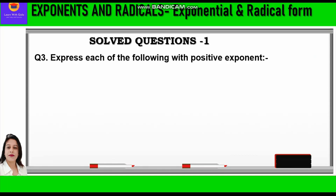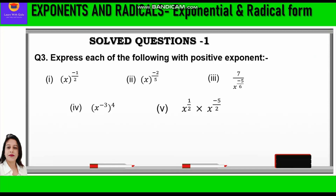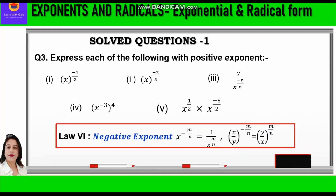Now let's move to question 3: express each of the following with positive exponents. Each part has a negative exponent, and we have to convert it to a positive exponent by applying Law 6 — the negative exponent law. This states that x raised to power minus m upon n equals 1 upon x raised to power m by n. So to convert a negative exponent to positive, we reciprocate the base. For a rational base, (x upon y) raised to power minus m upon n becomes (y upon x) raised to power m by n.